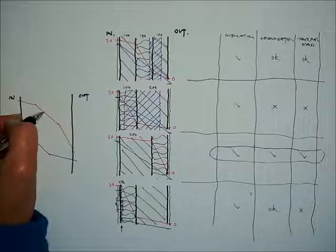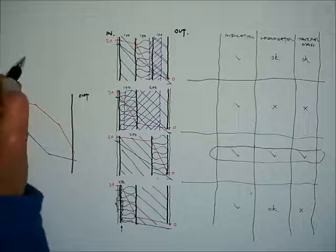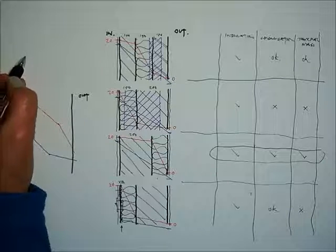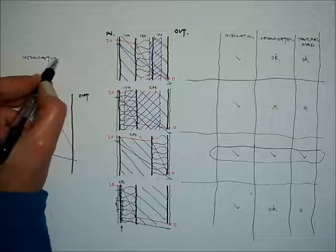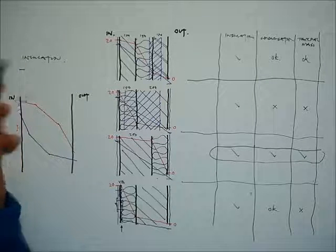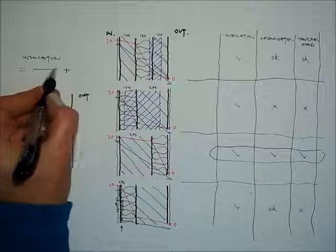The way you get the insulation to form that shape in the temperature gradient is to have little insulation on the inside and increasing insulation as you move to the outside.